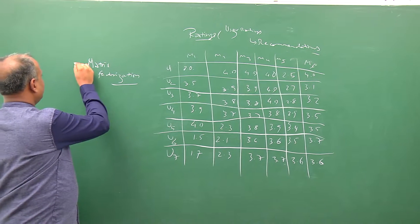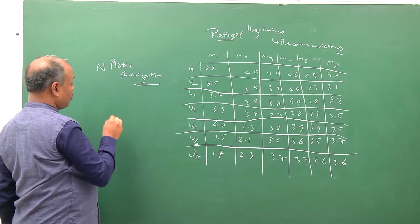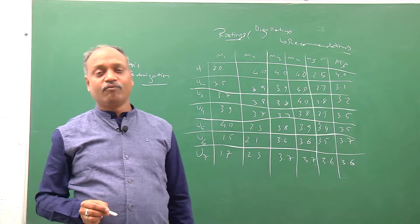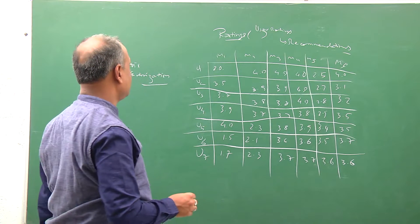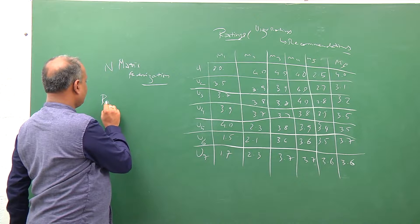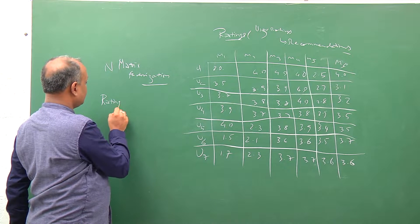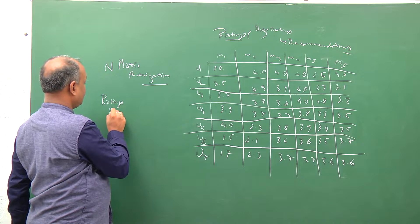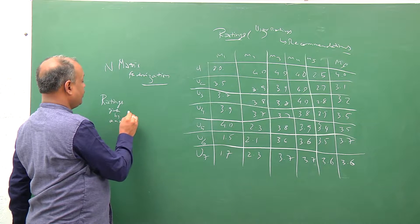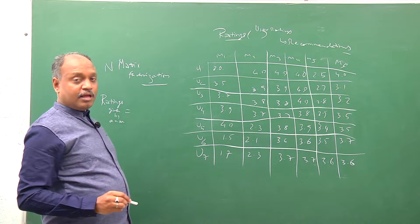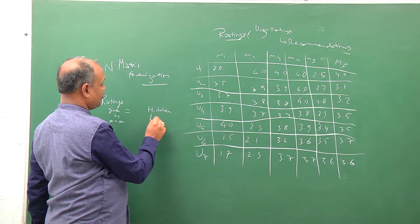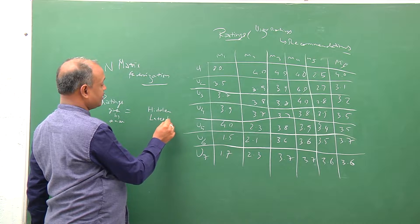More specifically called NMF for non-negative matrix factorization. This is an interesting technique where we assume that the ratings given by a user are based on some hidden characteristic, or what we call latent semantic characteristics.